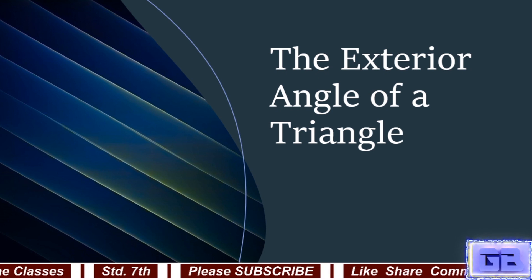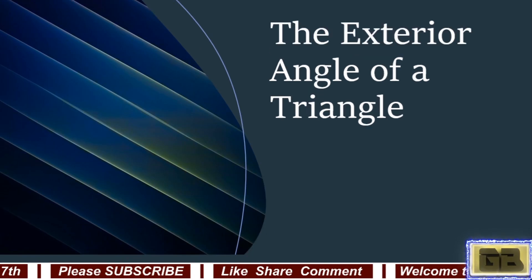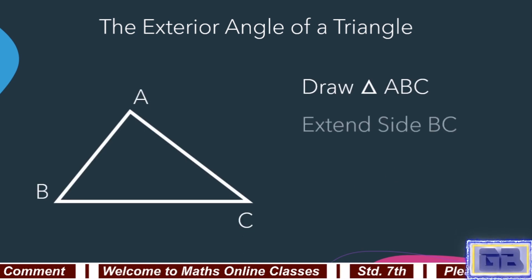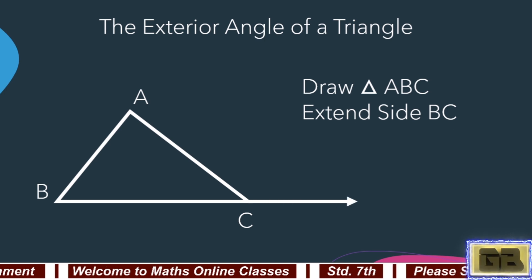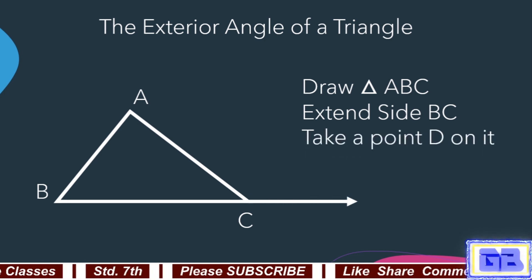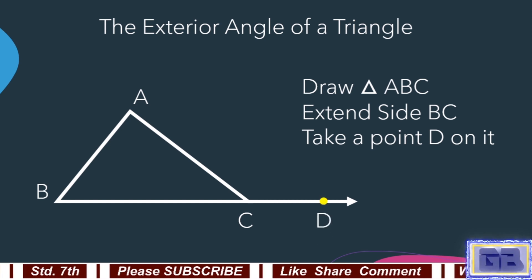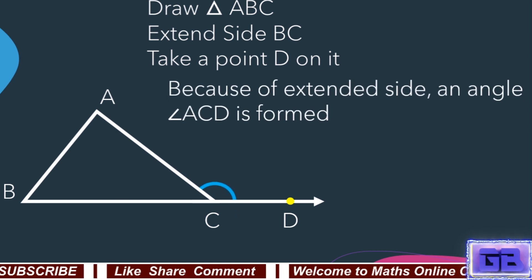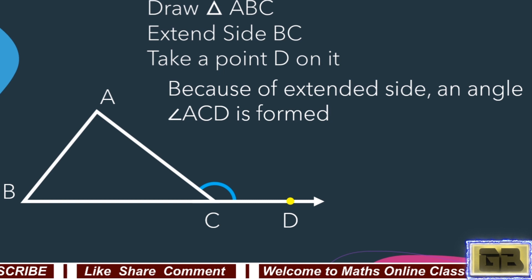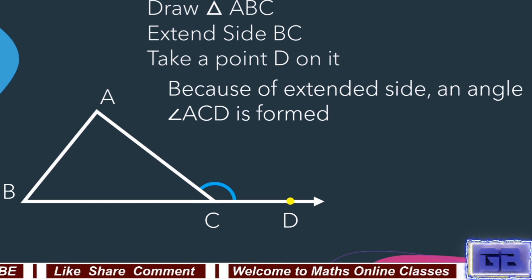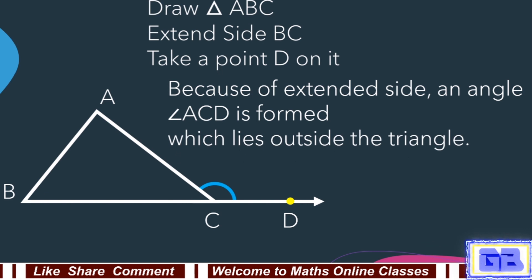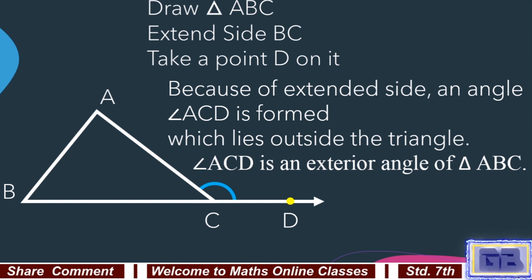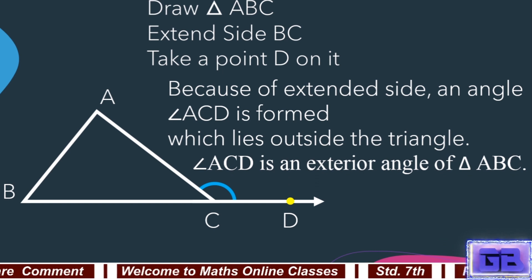Let us learn about the exterior angle of a triangle. Draw a triangle ABC, extend side BC, and take a point D on it. Because of the extended side, an angle ACD is formed which lies outside the triangle. Angle ACD is an exterior angle of triangle ABC.